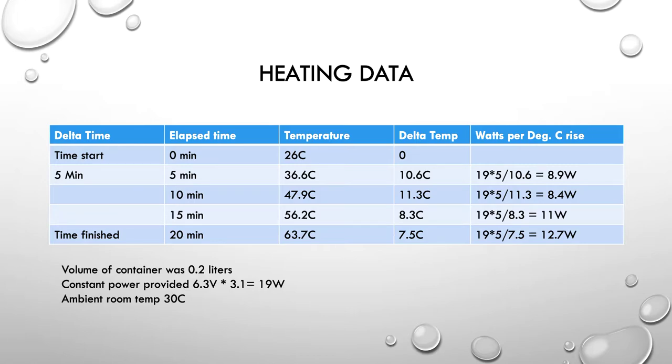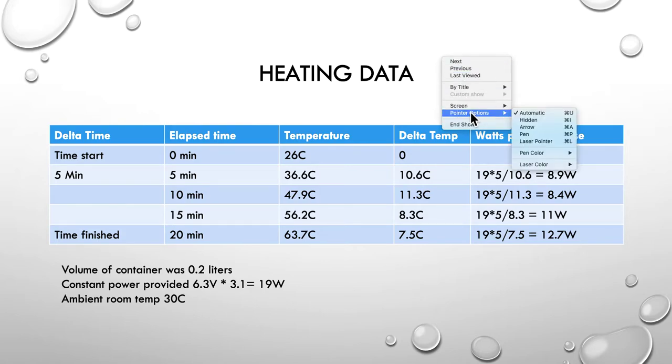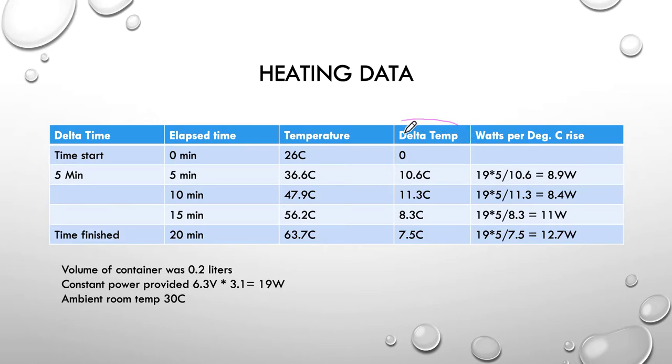So, we can use this information to put some information into another table. I've called this heating data, and you can see I've added some extra columns now to our table. So, here's our delta temperature, our change in temperature. Obviously, where we start, there's no change, and then we go up by 10.6 degrees, up by 10.3, up by 8.3, up by another 7.5. So, that's our difference in temperature for each of the readings.